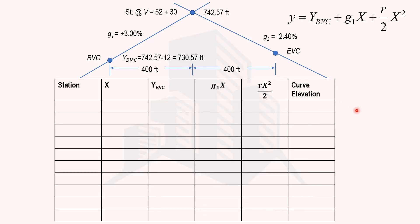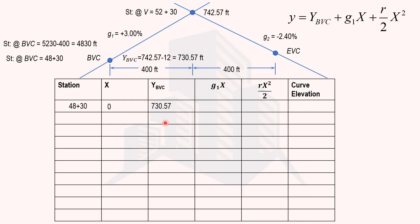The station at BVC is calculated by subtracting 400 feet from the vertex station 52+30, giving BVC at 48+30. At BVC, x = 0, so the g1·x term and the r·x²/2 term both equal zero, and the curve elevation equals y_BVC = 730.57 feet. The rate of change of grade r is calculated as (g2 − g1) / L, where L is the curve length.